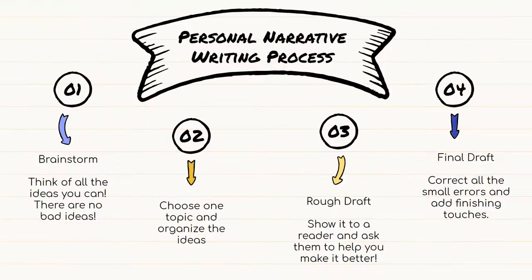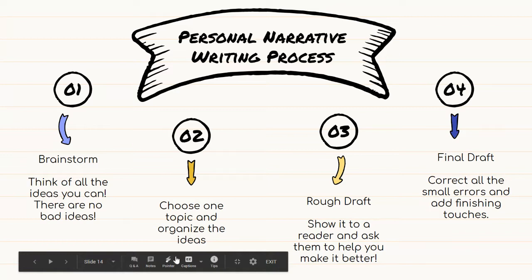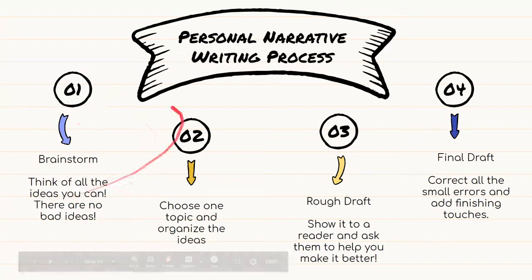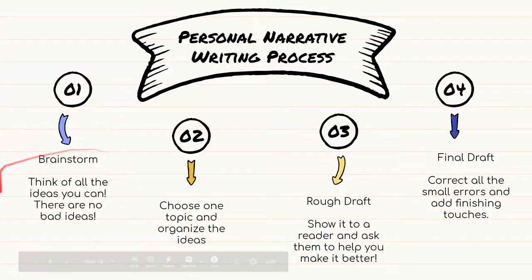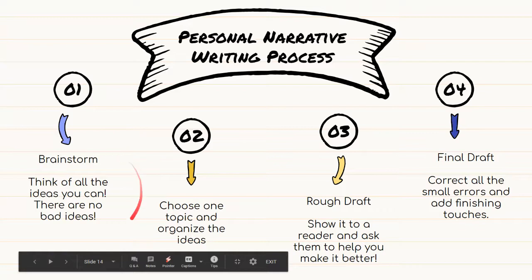We talked about the process of writing a personal narrative — personal story, same thing. First you brainstorm and come up with your ideas. You think of every idea you can. Who are the different people you could write about? What are your own experiences, your own story? Come up with all the ideas you can. Then choose who you're going to write about and why.